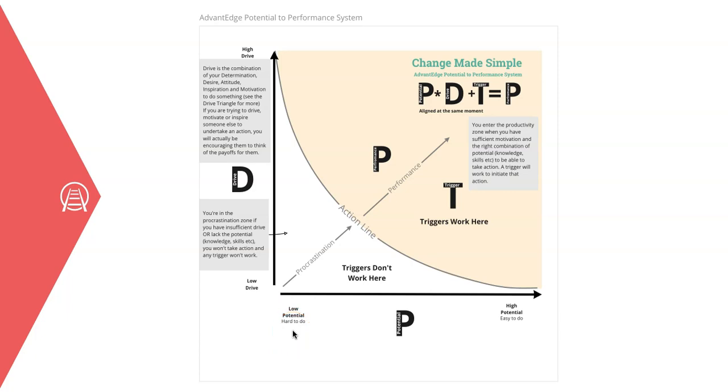Let's consider a simple example. Suppose you want someone to donate money to a stray dog shelter. If they have high drive and it's easy for that person to do, they will be in the upper right corner of the model. When a person is triggered here to donate, they will donate. They are in the productive zone.